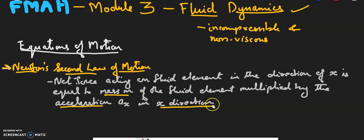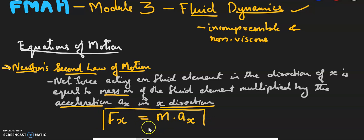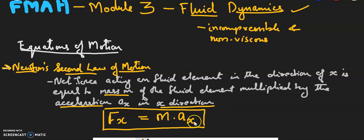That is: Fx = m × ax. So Newton's second law applied in the x direction gives Fx equal to m into ax. Now in fluid flow, there are different forces present.